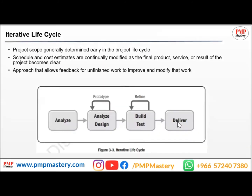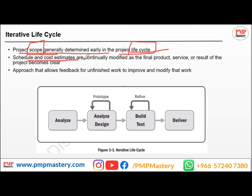Another development approach is the iterative life cycle. In this approach, the project scope is generally determined early in the project life cycle — for example, the overall scope for developing a car is defined at the beginning. However, the schedule and cost estimates are continually modified as the final product, service, or result of the project becomes clear.